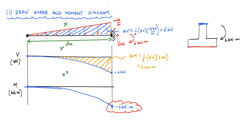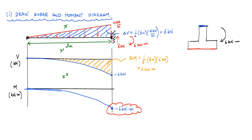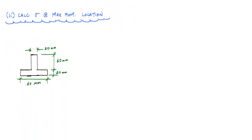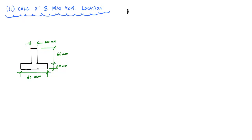Now we have a value for the moment and the next thing we want to do is draw the stress profile at this location using the bending formula. To calculate the normal stresses at the location of the maximum moment — right at the support — we use σ = −My/I. We already know the maximum moment, and since the equation with the negative sign assumes a positive moment, our M_max is negative six kilonewton-meters.